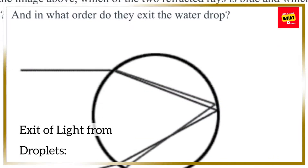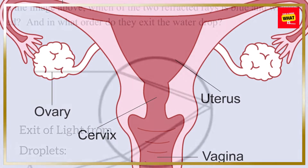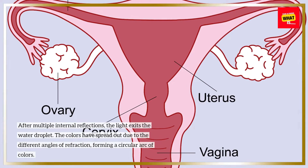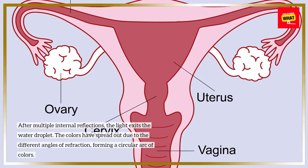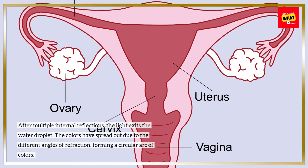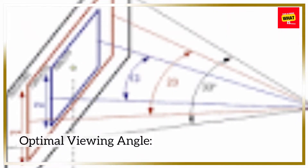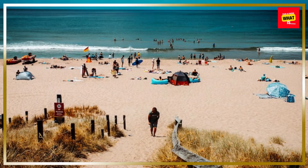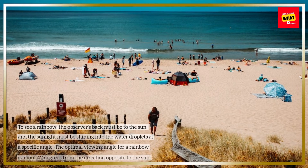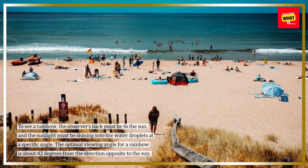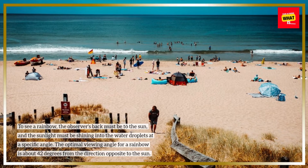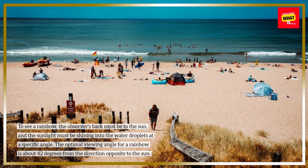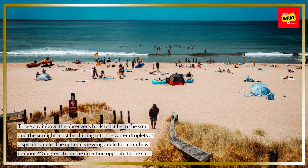3. Emergence and viewing angle. After multiple internal reflections, the light exits the water droplet. The colors have spread out due to the different angles of refraction, forming a circular arc of colors. To see a rainbow, the observer's back must be to the sun, and the sunlight must be shining into the water droplets at a specific angle. The optimal viewing angle for a rainbow is about 42 degrees from the direction opposite to the sun.